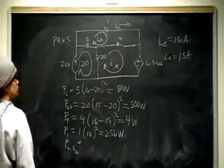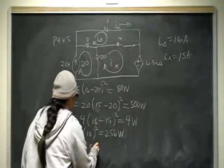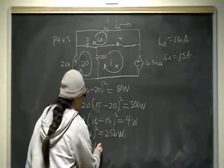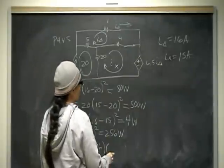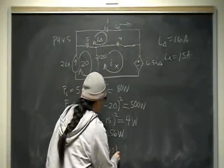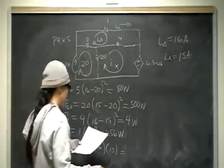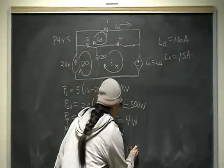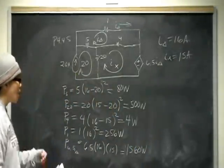So P of 6.5 I delta, the power absorbed by that circuit element is going to be P equals VI. So V is the 6.5 times I delta, we got I delta 16, and then the I sub X is the I going through that, and that's going to be times 15 amps. And that will give you that particular circuit element is absorbing 1,560 watts of power.